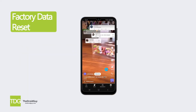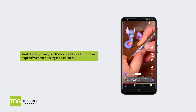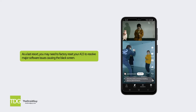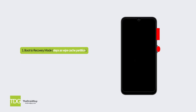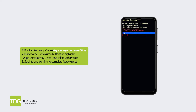Solution 4: Factory data reset. As a last resort, you may need to factory reset your A15 to resolve major software issues causing the black screen. Boot to recovery mode using the same steps as wipe cache partition. In recovery, use the volume buttons to highlight wipe data factory reset and select with power. Scroll to and confirm to complete the factory reset.